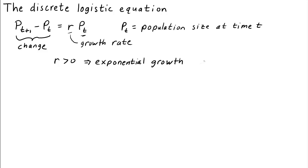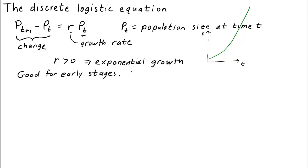This means that the population size grows without bound. So if we were to plot population size versus time, it would just keep growing and growing without bound, growing faster and faster as time increases. This could be a good model for early stages of population growth, but clearly it becomes bad for later stages because the population cannot grow without bound.